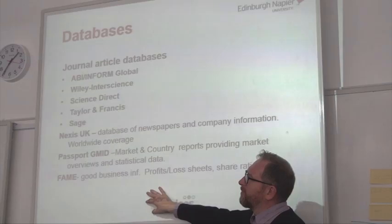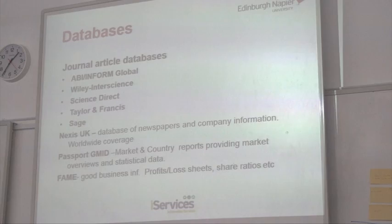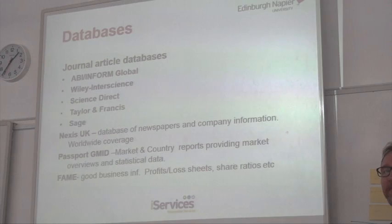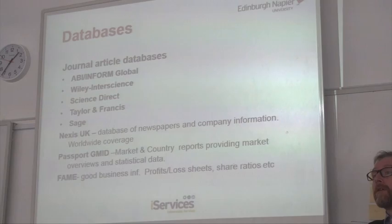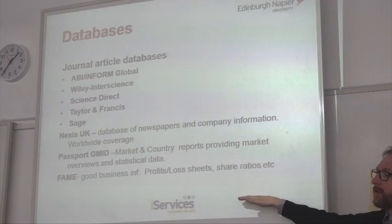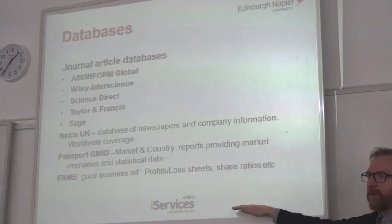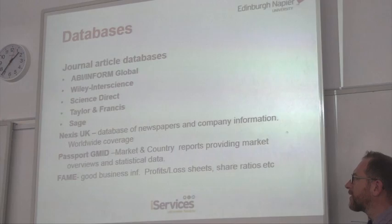Nexis is mostly newspapers with some company information. Passport is where you'd get employment stats and other economic and market reports. FAME is basically a balance sheet tool — you might not use that much in this subject, but there is an accounting element in your organisational context of HR module. FAME also lets you search for companies by industry and location — so you could look up the financial sector within Edinburgh, small and medium enterprises within Edinburgh, because you can filter by number of employees and turnover.